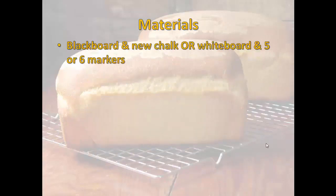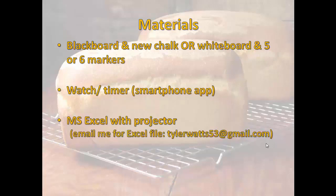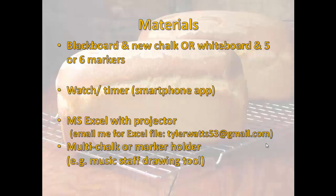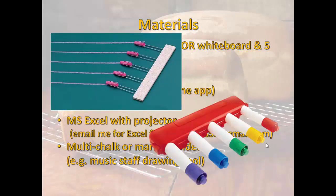Materials needed for the activity include either a blackboard with a single piece of new chalk, or a whiteboard with five or six whiteboard markers. A watch or timer to keep track of the one-minute intervals. A smartphone timer app works very well. Microsoft Excel with a projector so the class can see the workbook. Email me at the address given and I'll supply the exact Excel spreadsheet I use. And finally, a multi-chalk or marker holder, such as used by music teachers to draw a music staff — available for chalk and for markers — which will be used to give students insight about applying technology to reduce production costs.